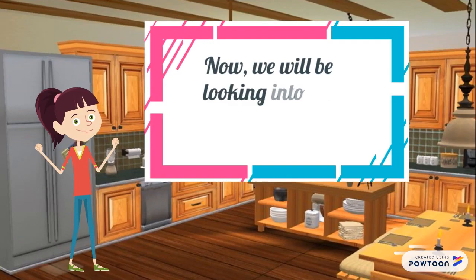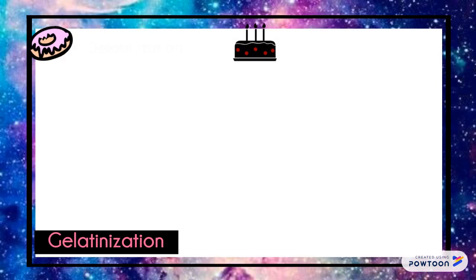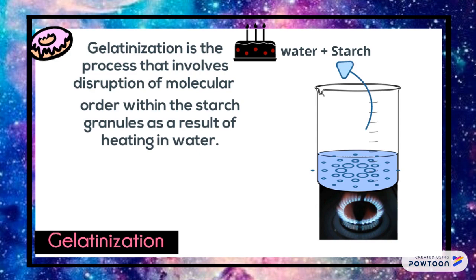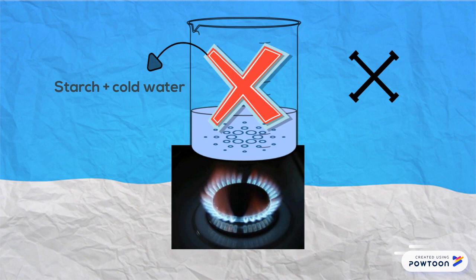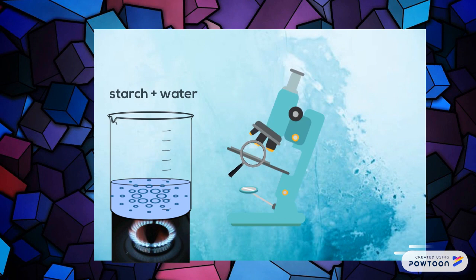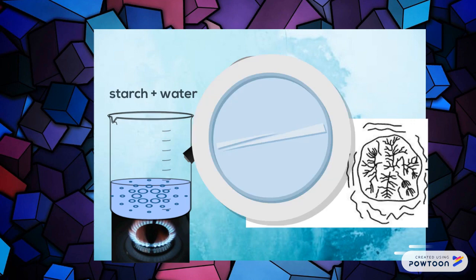Now, we will be looking into the principle of gelatinization. Gelatinization is the process that involves destruction of molecular order within the starch granules as a result of heating in water. Without heat applied, starch is insoluble in cold water and it will form a suspension. In contrast, when starch is heated in water, the granule will absorb water and swell. The absorption of water by the amylopectin region within the granule will destabilize its crystalline structure.